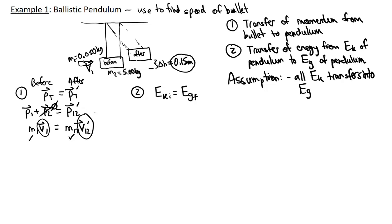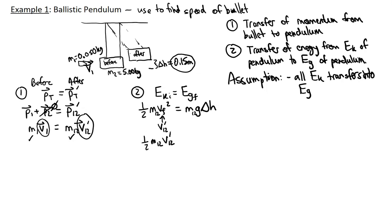Over on the energy side, kinetic energy equals gravitational potential energy: ½·M1,2·(V1,2′)² = M1,2·g·Δh. We can rewrite V1,2 prime — that's the velocity of the combined pendulum-bullet system just after the collision, before it swings. Multiply both sides by 2, and divide both sides by M1,2 — the masses cancel — leaving V1,2′² = 2·g·Δh. Take the square root of both sides to get V1,2 prime.